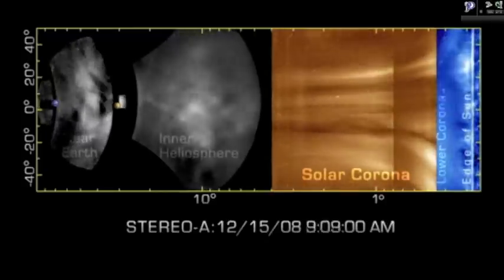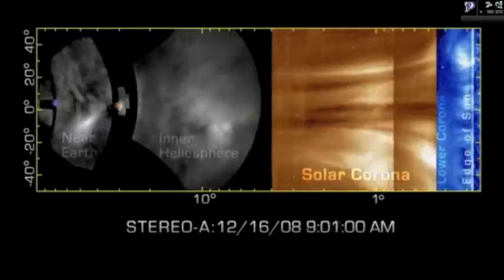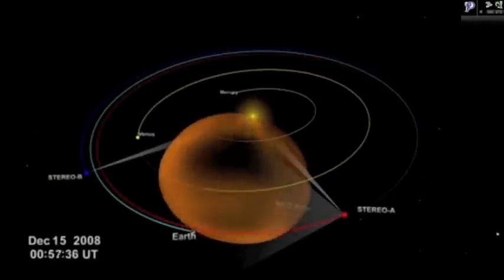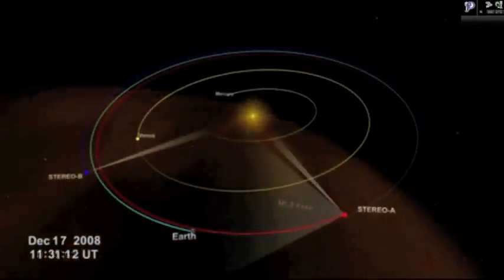By the time the data were collected, Stereo A was nearly 45 degrees ahead of Earth in its orbit, affording a very clear view of the CME's path from the Sun to Earth.